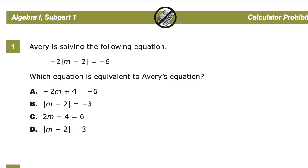Avery is solving the following equation: negative two times the absolute value of M minus two equals negative six. Which equation is equivalent to Avery's equation? One of the things I can look at is what are the relationships between the terms. This negative two being connected directly to the absolute value means that it is multiplying.